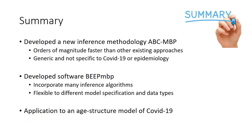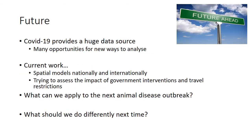In summary, we have developed a new inference methodology, ABC MBP, which is significantly faster than existing approaches. This approach is generic and not specific to COVID-19 or, for that matter, epidemiology. We have created a software tool, BEEP MBP, which incorporates many inference algorithms and is flexible to different model specifications and data types. Finally, we have applied this new methodology to data from England and obtained a fully parameterised age-structured model. Looking to the future, COVID-19 provides a huge data source which will be poured over for many years, with many opportunities for new ways of analysis. We are currently working on spatial models trying to assess the impact of government interventions and travel restrictions, and also adapting what we have learned from COVID-19 modelling to help us to be more prepared for the next animal disease outbreak.